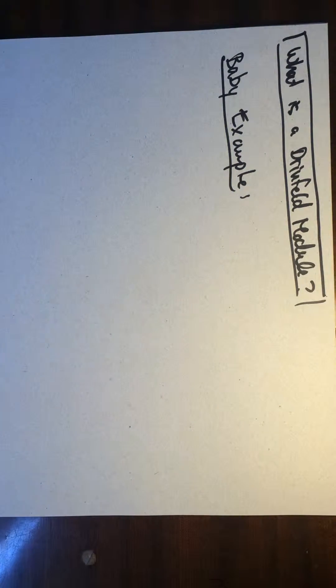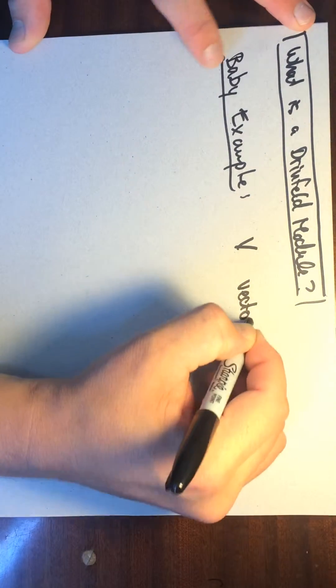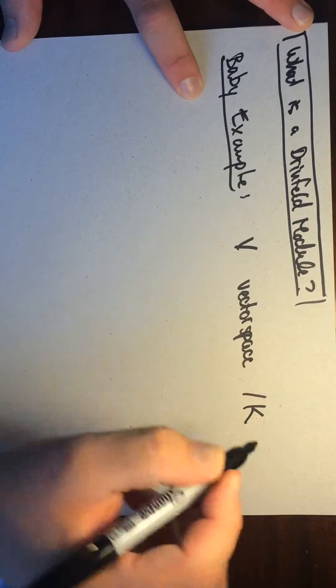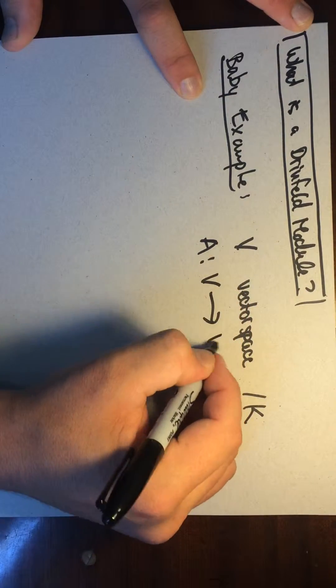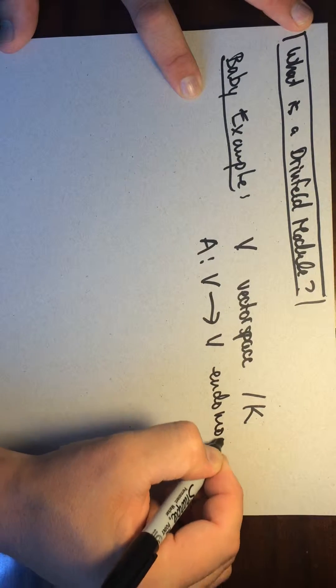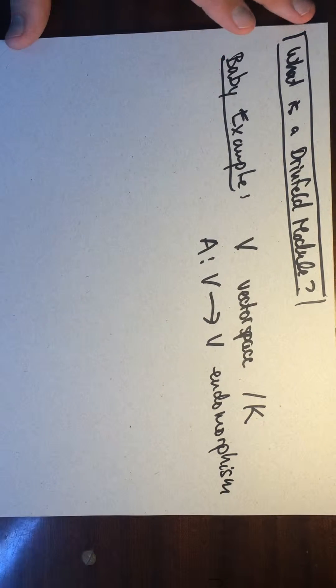Let me give you a baby example. So this is an example of an endomorphism module. So let's take V to be a vector space over a field K. We'll take A from V to V to be an endomorphism. So this is going to be just like a matrix. Okay, this is what we're going to think about.